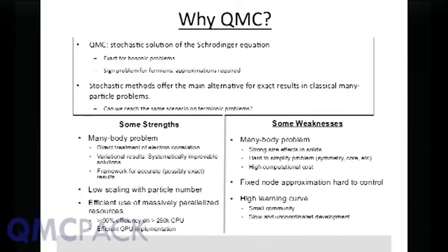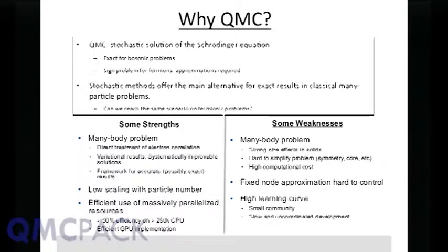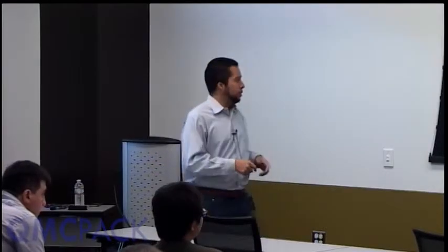Bosons you can solve exactly with these numerical methods. Some strengths of QMC: we're solving the many-body problem directly, so we already avoid the limitations of DFT and mean field where you have to approximate the Hamiltonian empirically. We're treating electronic correlation directly. Most methods are variational, which allows a systematic way to improve. In a sense, it's a framework — at this point not exact, but really a framework for exact or at least very accurate results.